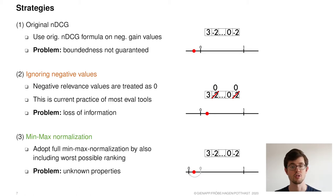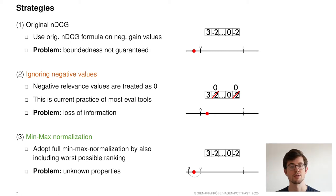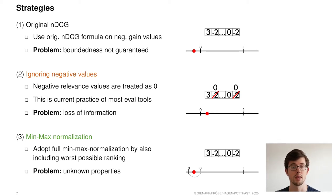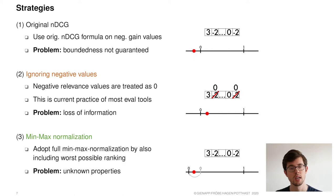As a third strategy, we propose a novel modification of the NDCG measure that adopts full min-max normalization. Here, not only the ideal, but also the worst possible ranking is incorporated. This ensures boundedness in all cases while also including all available information. As a downside, the properties of this new measure are still unknown. Therefore, in the remainder of the paper, we provide more context on which of these three strategies performs most favorably in practice.